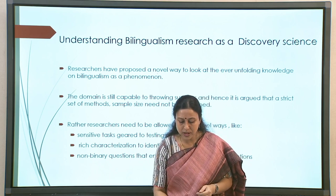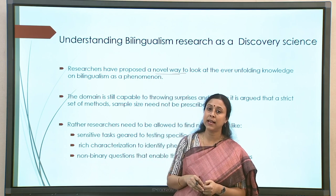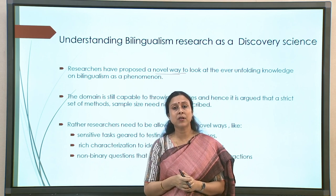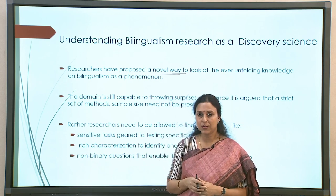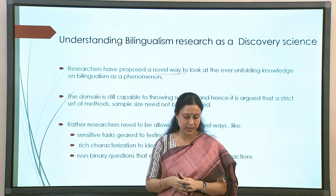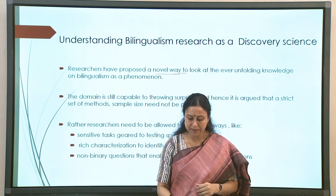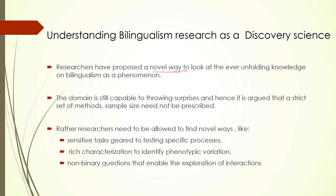As a result, researchers have proposed a novel way to look at the ever-unfolding knowledge on bilingualism as a phenomenon. Every other day we have a new paper talking about the same phenomenon unfolding very differently across populations. In order to tap into that, we need to look at different kinds of methods to arrive at conclusions — because the domain is still capable of throwing surprises. A strict set of methods, sample size, etc. cannot and should not be prescribed. They have also given ideas about what to do: sensitive tasks geared towards testing specific processes, creating a fine-tuned set of tasks sensitive towards a particular question, setup, or set of population.